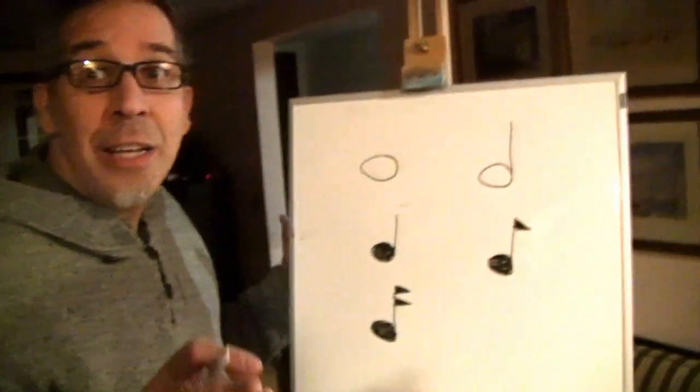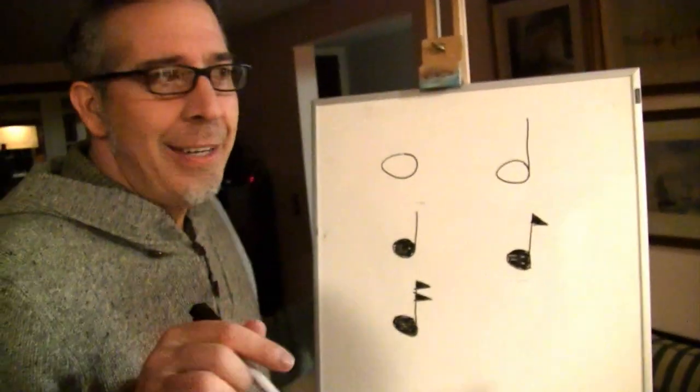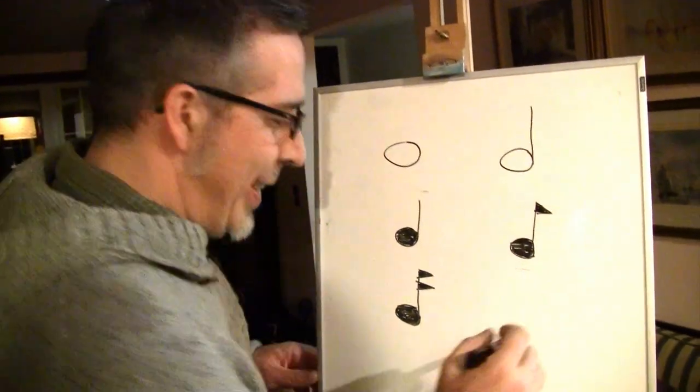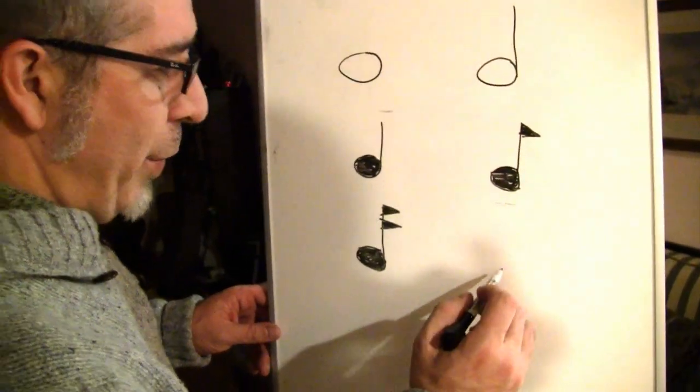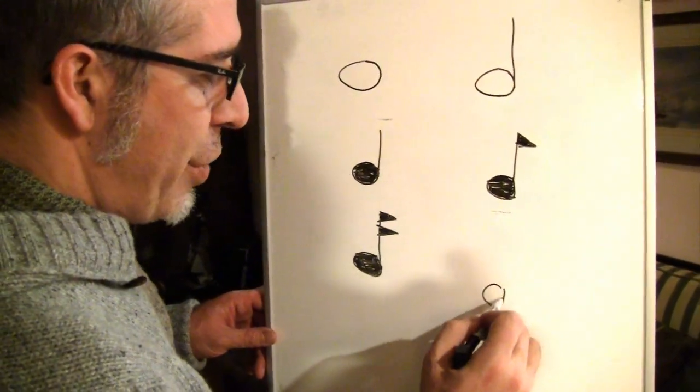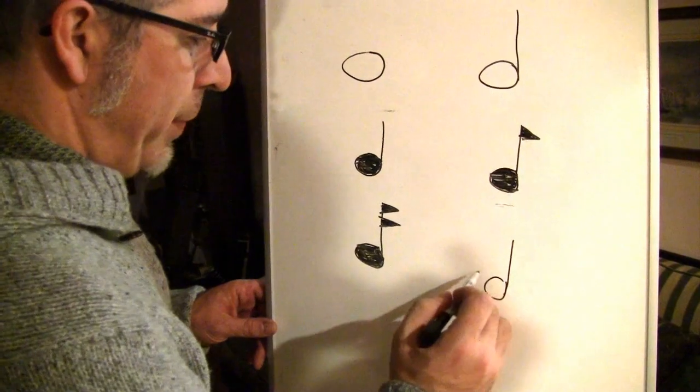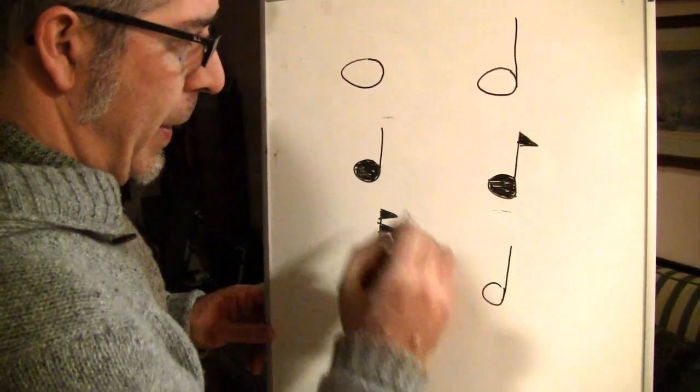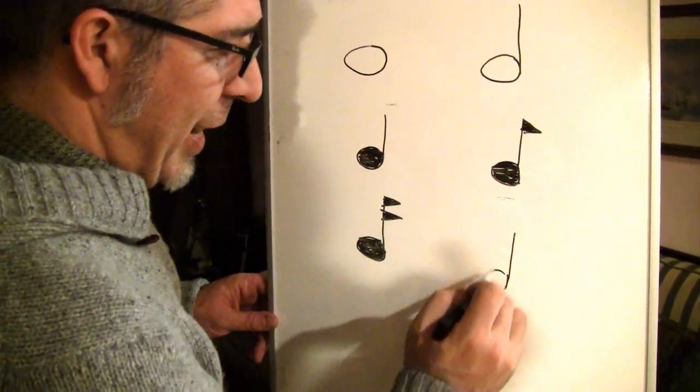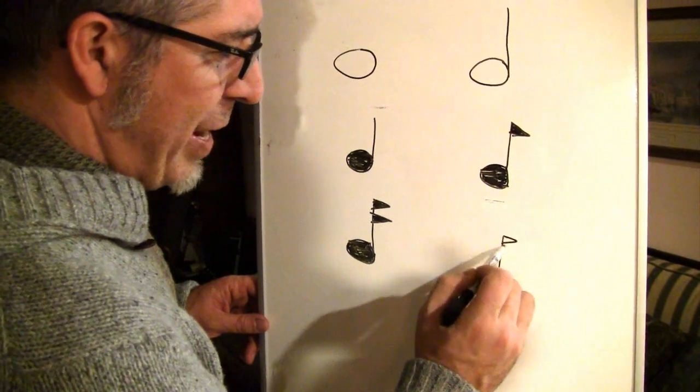Now we're getting into a little trickier area to try to remember how to do this. Next, we have the thirty-second note, which is a circle, a stem, and three flags.